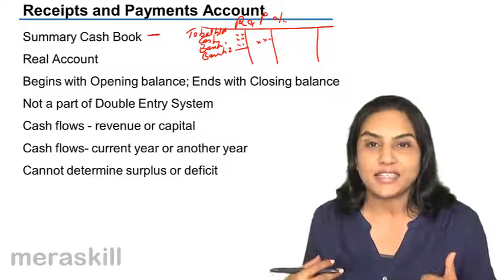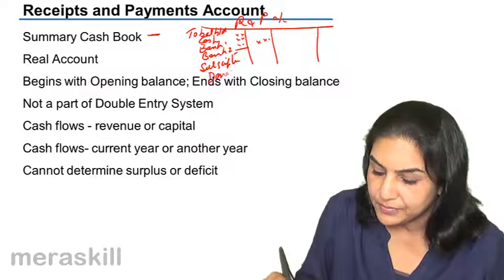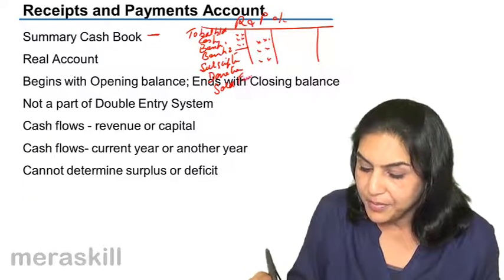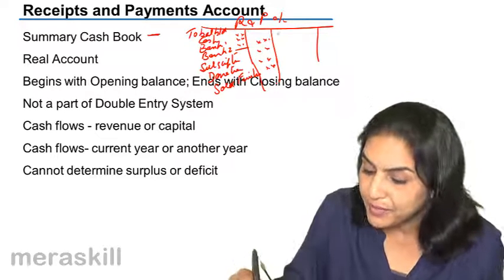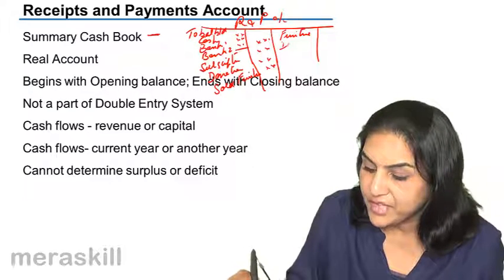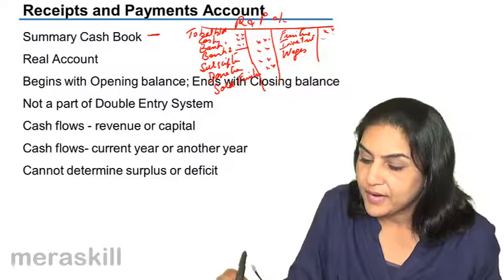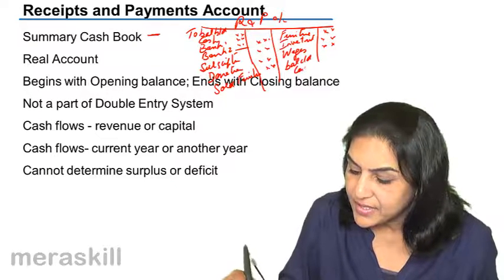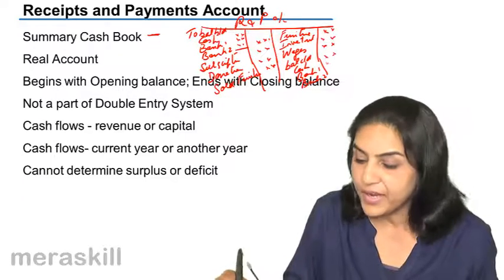Then we see what are the heads on account of which money has come in — maybe subscriptions, maybe donations, maybe we sold furniture, maybe we sold investments. Similarly on the other side we record what the payments were — maybe we purchased furniture, purchased investments, paid wages, whatever cash flows were there. Ultimately, the closing balance gives us the balance of cash in hand and the balance at bank one and bank two, assuming we had two bank accounts.